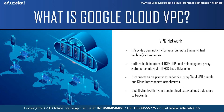Some of the functionalities offered by Google Cloud VPC networks include: providing connectivity for Compute Engine virtual machine instances, including Google Kubernetes Engine clusters, App Engine instances, and other Google Cloud products built on Compute Engine VMs. It offers built-in internal TCP/UDP load balancing and a proxy system for internal HTTPS load balancing. It can also help in connecting to on-premises networks using Cloud VPN tunnels and Cloud Interconnect attachments, and it distributes traffic from Google Cloud external load balancers to the backend.